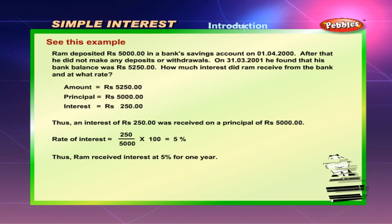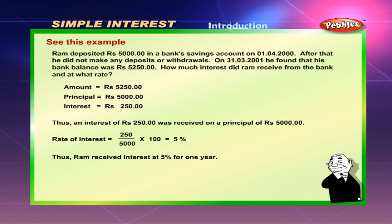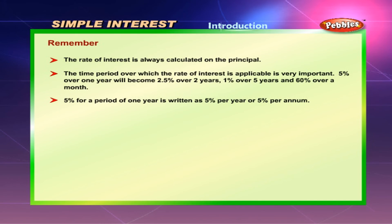Amount is equal to rupees 5,250. Principal is equal to rupees 5,000. Interest is equal to rupees 250. Thus, an interest of rupees 250 was received on a principal of rupees 5,000. Rate of interest is equal to 250 divided by 5,000, multiplied by 100, which is equal to 5%. Thus, Ram received interest at 5% for one year.